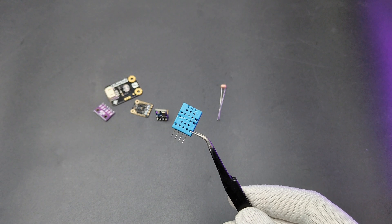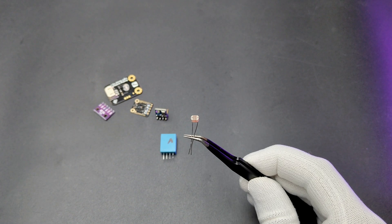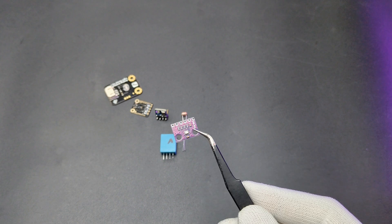Like this DHT11 for temperature and humidity measurement, LDR for light, VMP for pressure, etc.